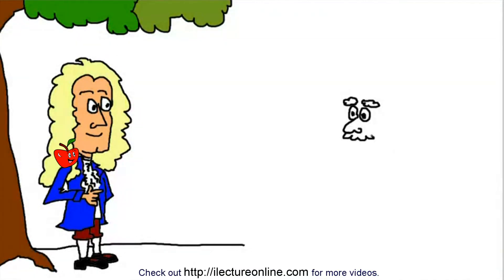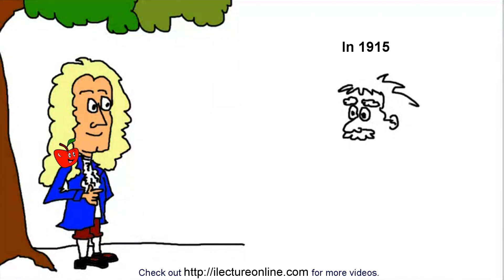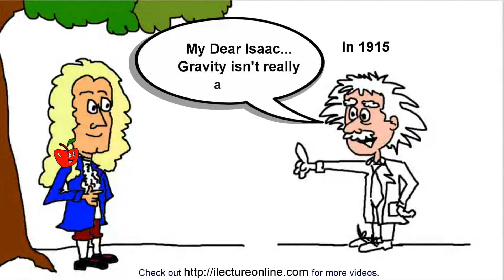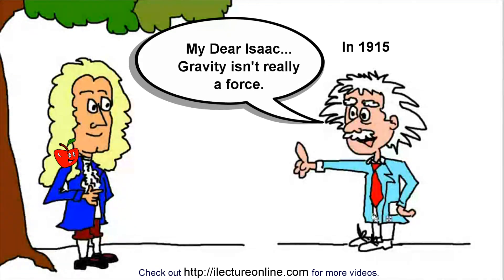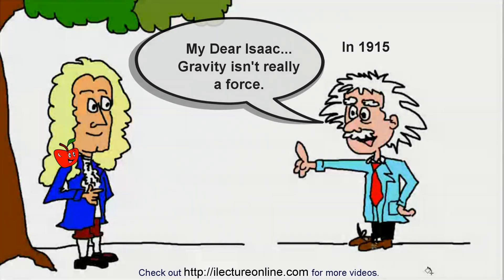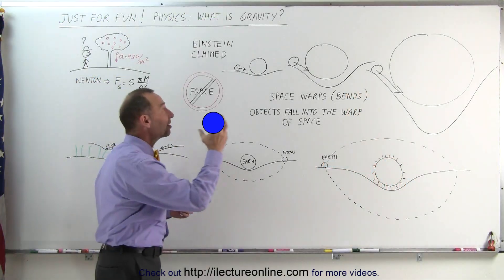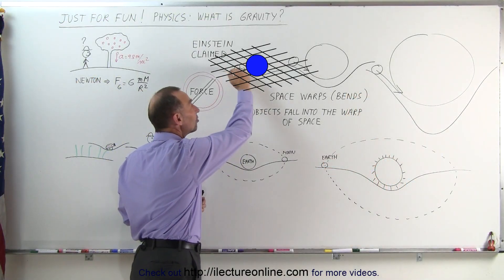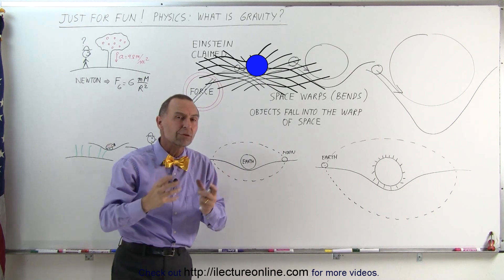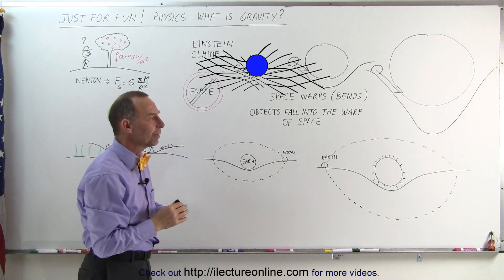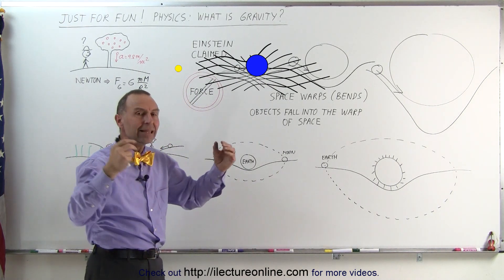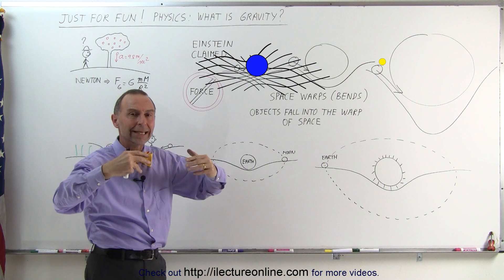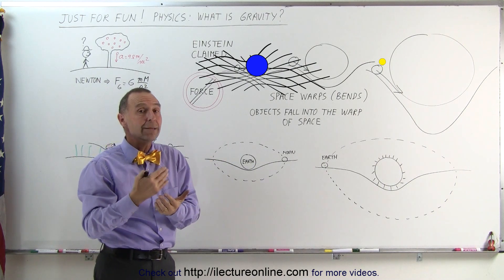But when Einstein came along, he challenged that thought. He said gravity isn't really a force. What he claimed was, when you place an object in space, that space itself would bend — it would warp into the four-dimension — and anything that comes close to that warp would simply fall into it. It didn't require any mass.